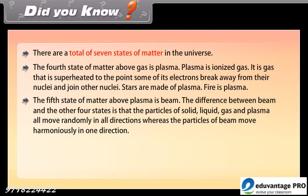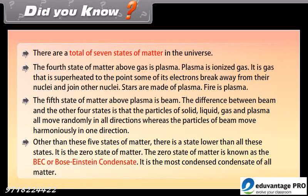The fifth state of matter above plasma is beam. The difference between beam and the other four states is that the particles of solid, liquid, gas and plasma all move randomly in all directions, whereas the particles of beam move harmoniously in one direction. Other than these five states of matter, there is a state lower than all these — the zero state of matter, known as the BEC: Bose-Einstein condensate.